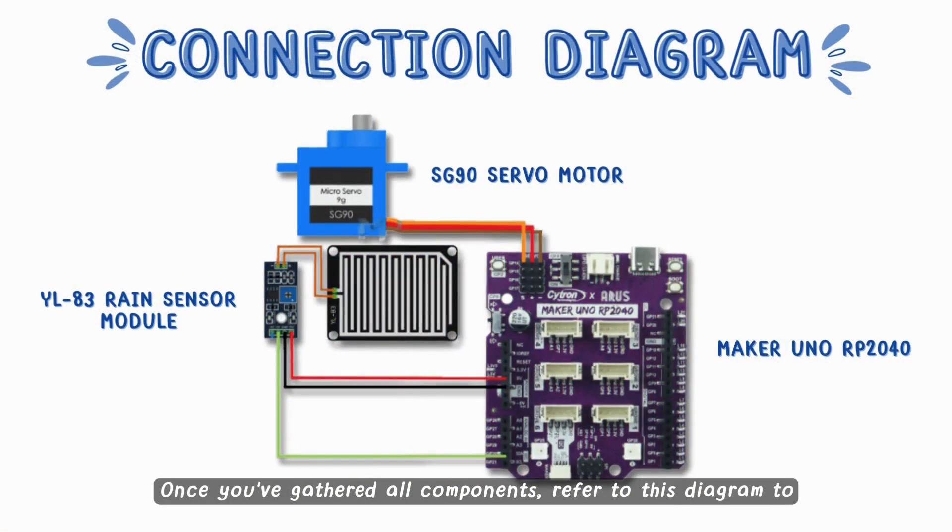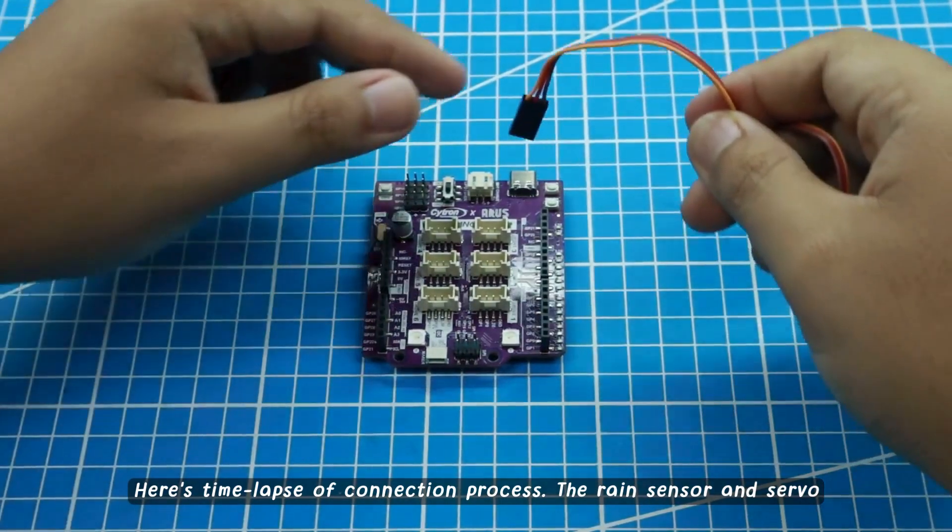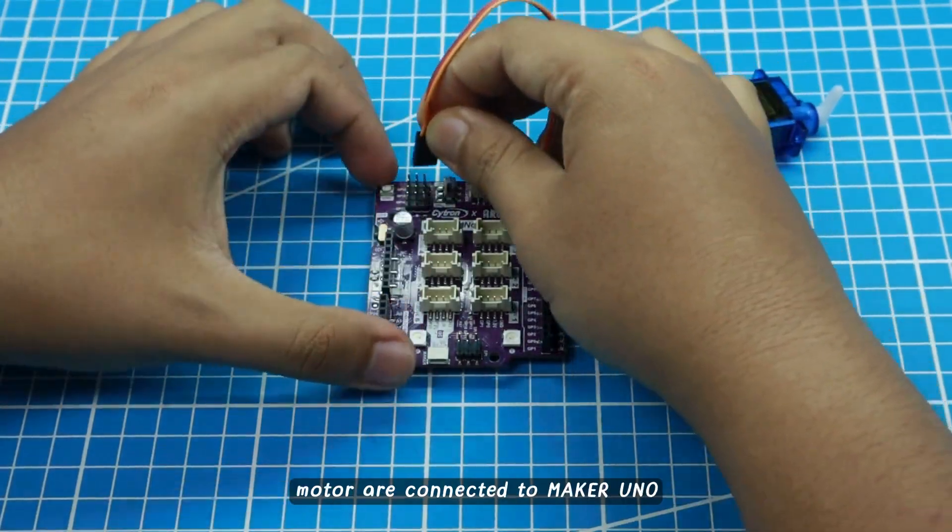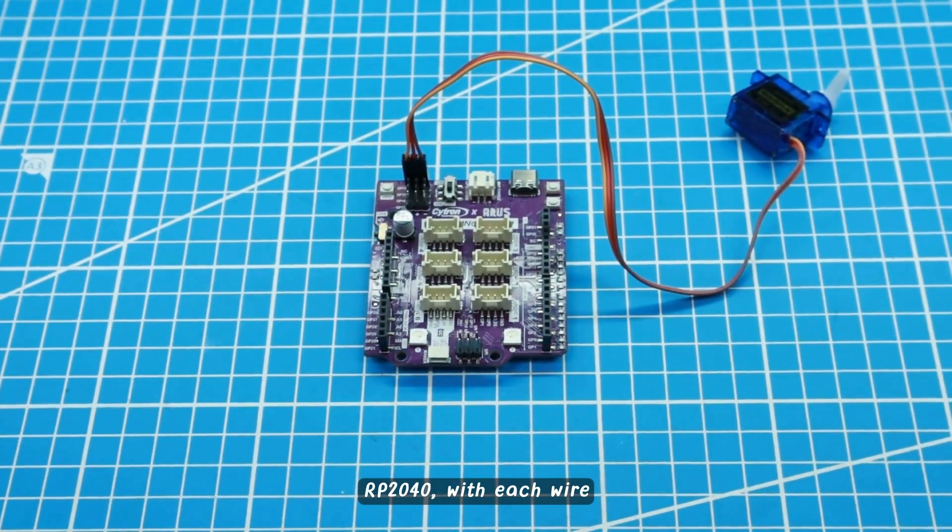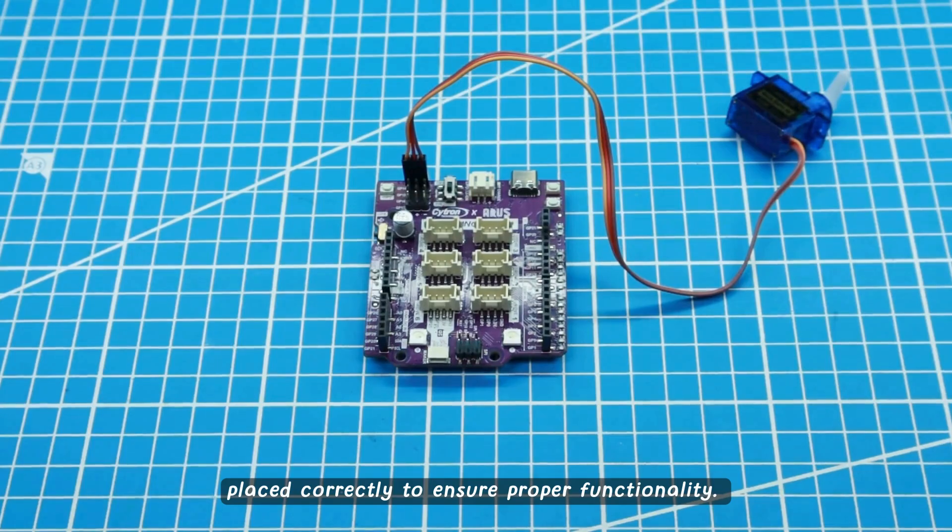Once you've gathered all the components, refer to this diagram to see how everything should be connected. Here's a time-lapse of the connection process. The rain sensor and servo motor are connected to the Maker UNO RP2040, with each wire placed correctly to ensure proper functionality.